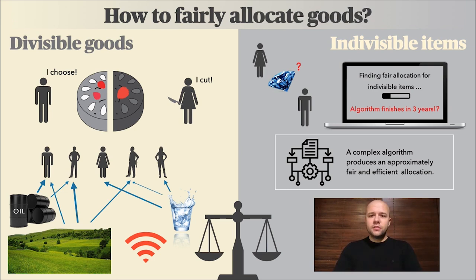Once we move from divisible goods to indivisible items, the story changes completely, and we are faced with two challenges. First, in the case of indivisible items, fair allocations might not even exist — for example, you cannot fairly allocate one indivisible item to two players; one will remain unhappy in any case. Second, even checking if a fair allocation exists or not is computationally prohibitive — the time taken is exponential.